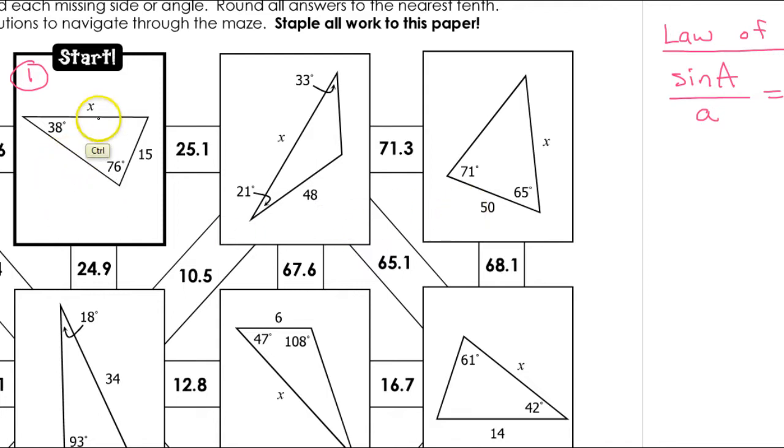And I'm looking for side X, which of course is across from the angle that is 76. So according to the law of sines, the sine of the angle 76 divided by the side that's across from it, which is X, should equal the sine of another angle divided by the side that's across from it. So I'm going to say the sine of 38 divided by 15.